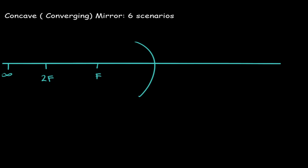This trick will help us memorize five of the six scenarios. What we need to do is draw a one at infinity, two in between infinity and 2f, three at 2f, four in between 2f and f, and five at the focal point.